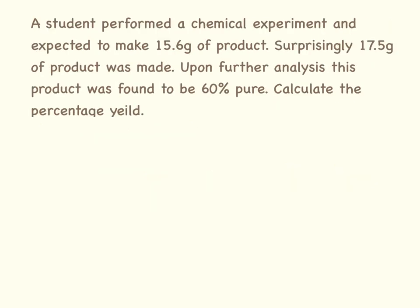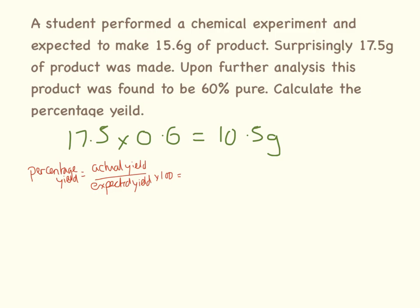This one is a touch more complicated. They expected to make 15.6 grams of product and actually made 17.5 grams of product. It's surprising because you expect to make less product than you're actually expecting. Upon further analysis, the product is found to be 60% pure. The first thing we need to do is take our 17.5 grams and times that by 0.6 to get our 60% of it. So 17.5 times 0.6 equals 10.5 grams. So we can say that we actually got 10.5 grams of our product and that is going to be our actual yield. So 10.5 divided by 15.6 times 100 equals 67.3%.